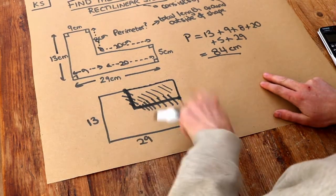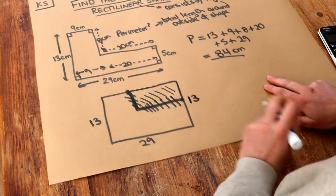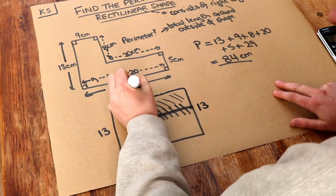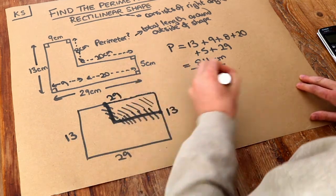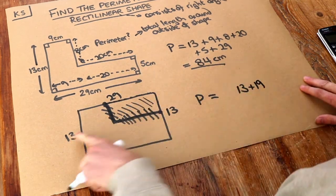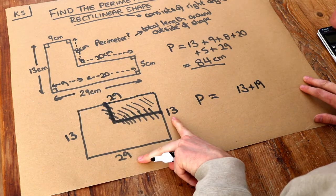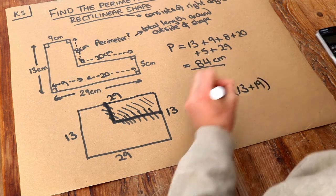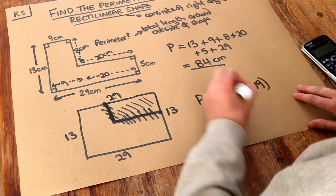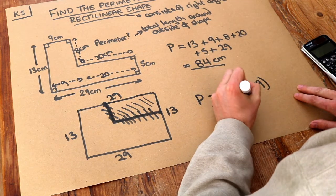So if that's 13, this total length here is 13. If that's 29 at the bottom, we've got 29 at the top. And now the perimeter is just 13 plus the 29. So that's the two combined. And we want to double that because we've got two lots of them. So we do two lots of 13 plus 29. And that will give you the same answer of 84 centimeters.